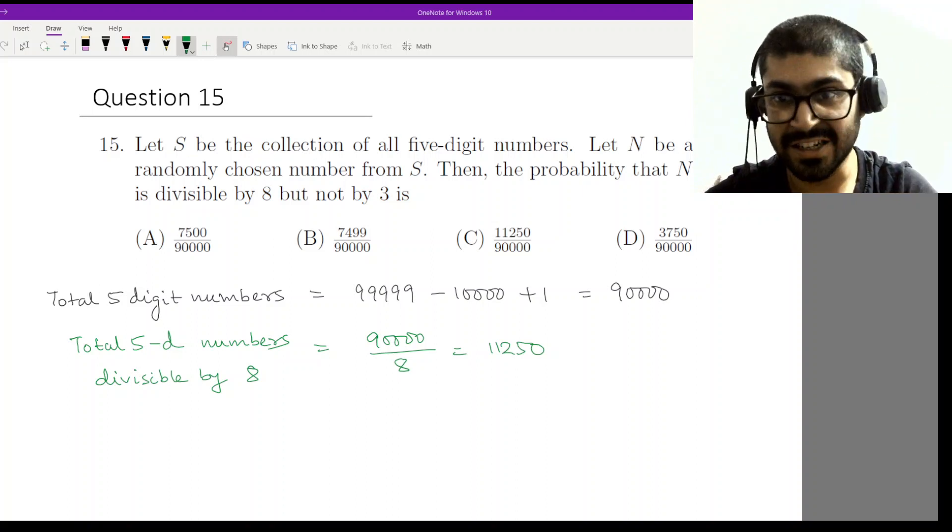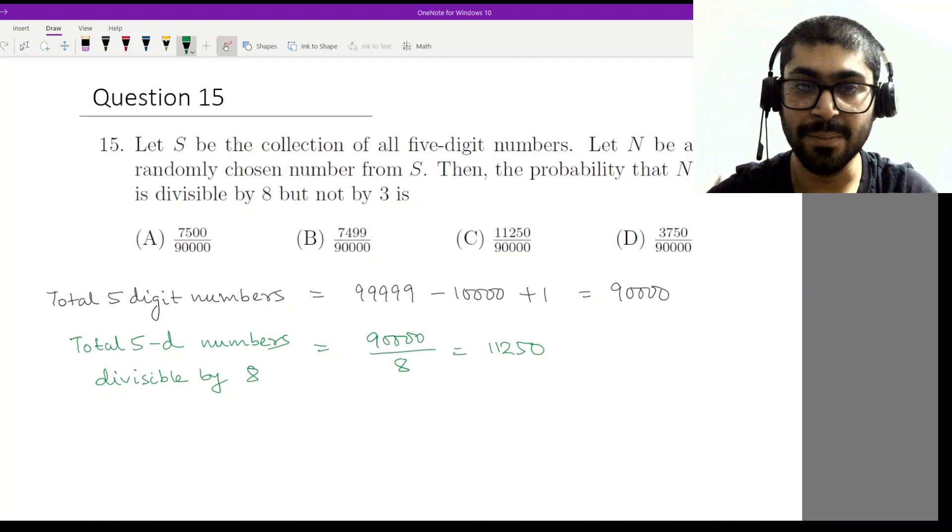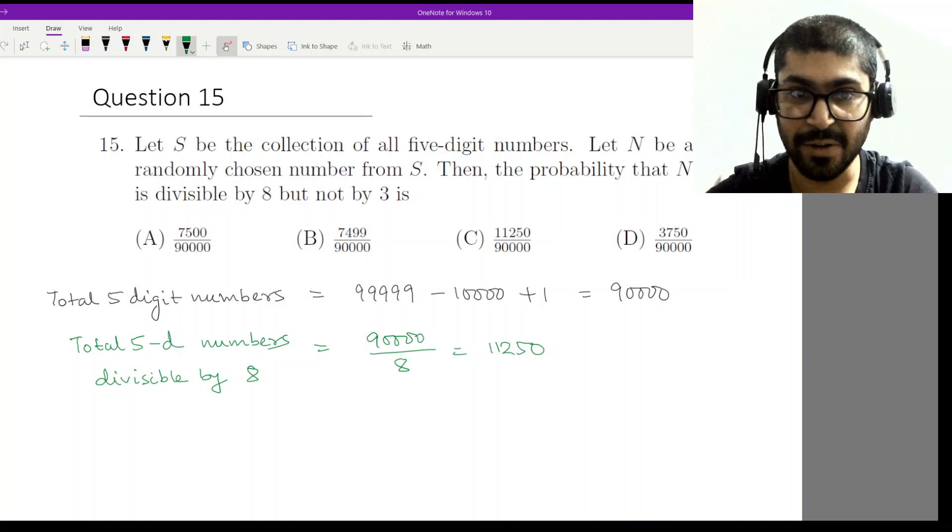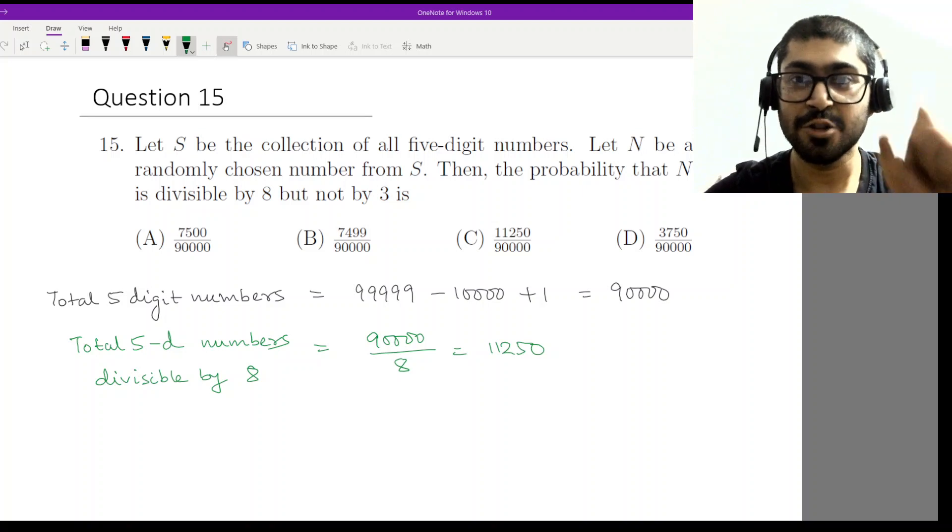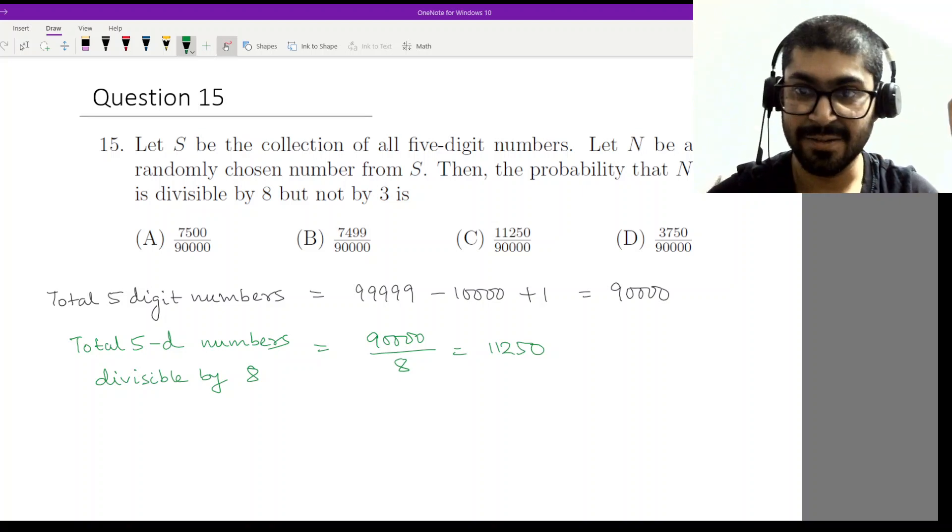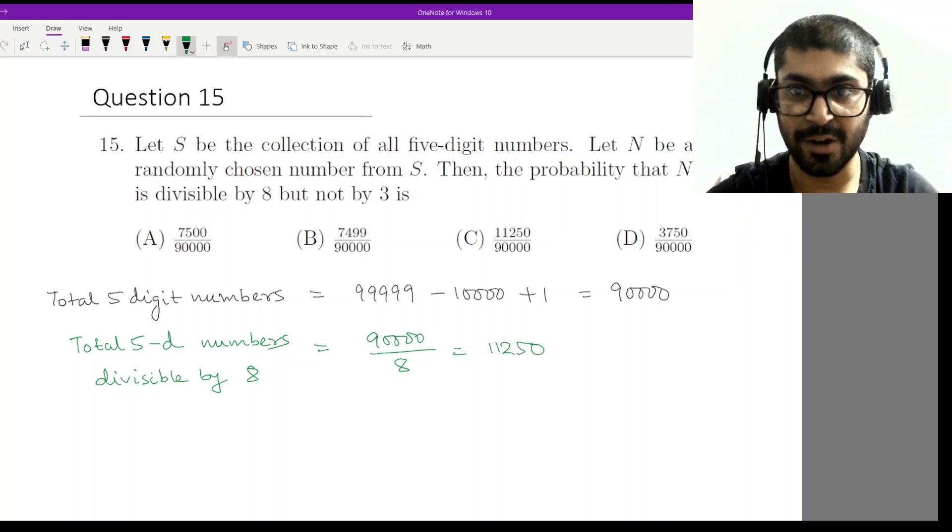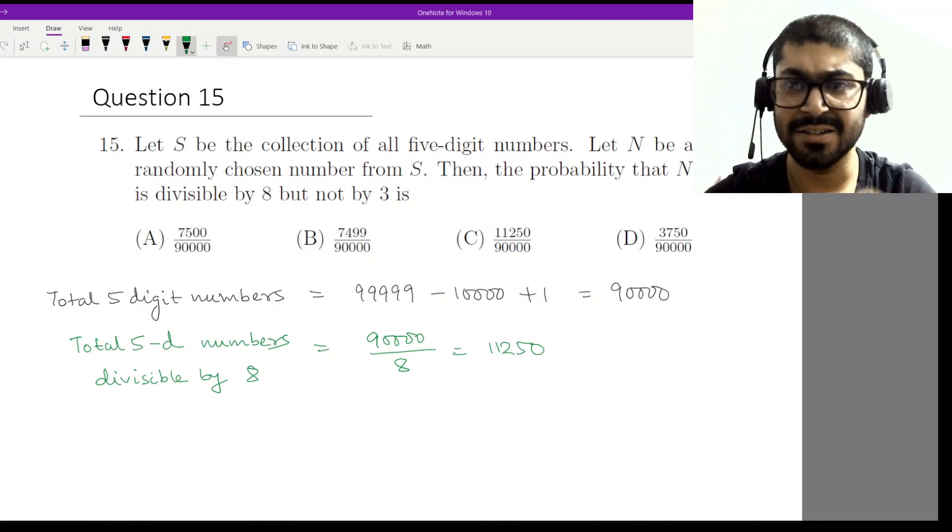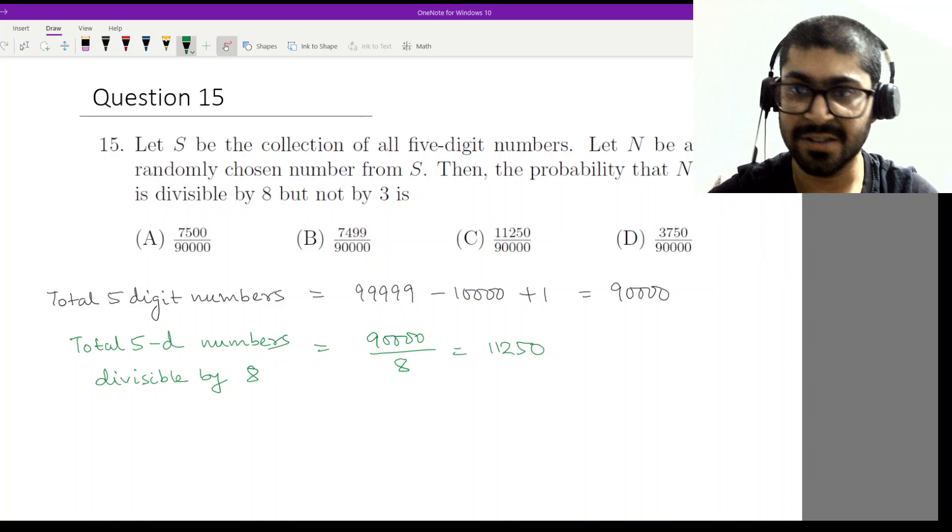This comes from the property of GCDs because 8 and 3 are co-prime. If a number is divisible by 8 and not divisible by 24, then it should be divisible by 8 and not by 3. This was discussed in the chapter where we learned about GCDs.